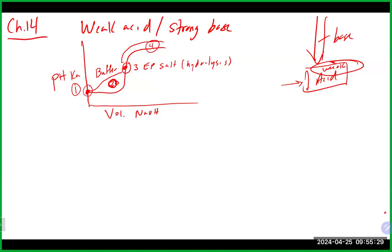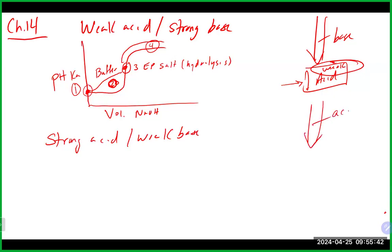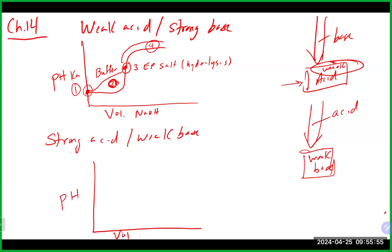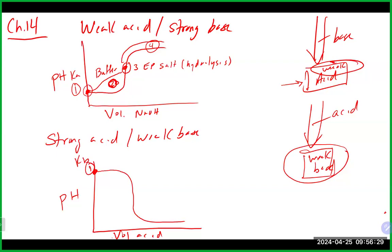The other titration type we talked about is a strong acid and weak base titration. In this setup, the acid is in the burette and we're adding it to our weak base. Because we're starting with a weak base, the titration curve looks opposite - we start high and end low in terms of pH. We still have the same four parts. At the very beginning, the only thing in the beaker is a weak base, so it's just a Kb-type problem.